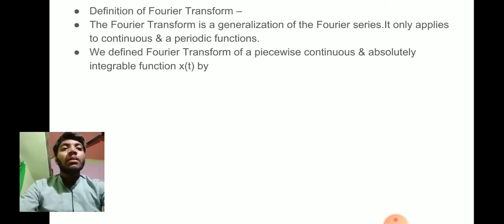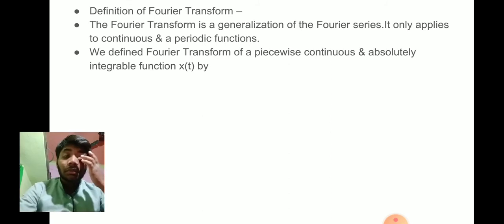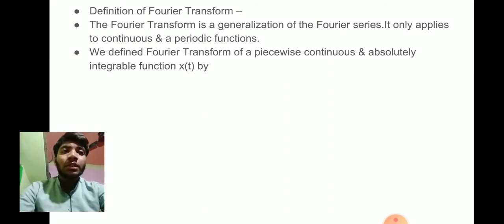We define Fourier Transform of a piecewise continuous and absolutely integrable function f of x of t by x of omega is equal to f of x of t, which is equal to integration from minus infinity to infinity x into omega times e to the power integral omega t d omega.